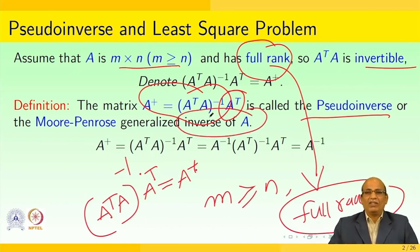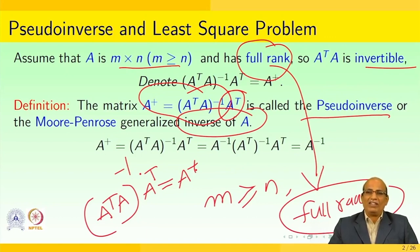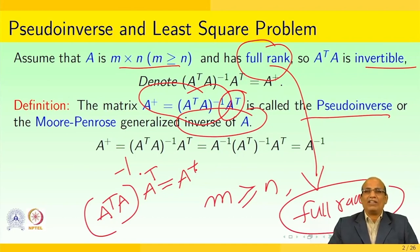The generalized inverse of A is a special class of matrices. With the generalized inverse, we can find the inverse of matrices where the matrix is not actually a square matrix. In the case of a square matrix, the left inverse and right inverse both happen to be the same, which we call the inverse of the matrix.